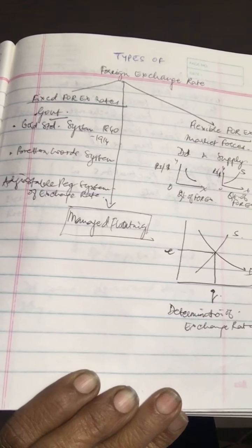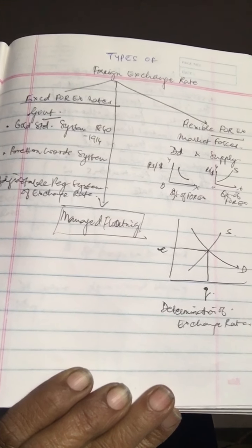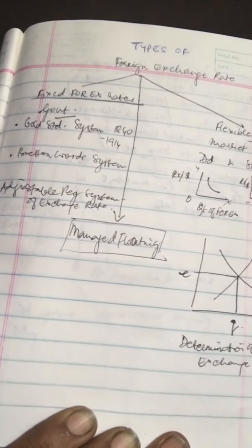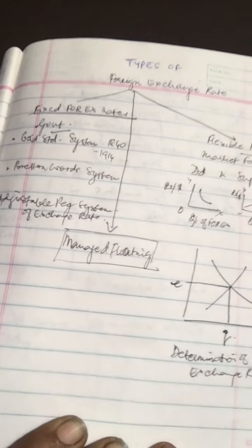The value of currency is allowed to fluctuate freely according to changes in demand and supply of foreign exchange, and there is no government intervention in the foreign exchange market.